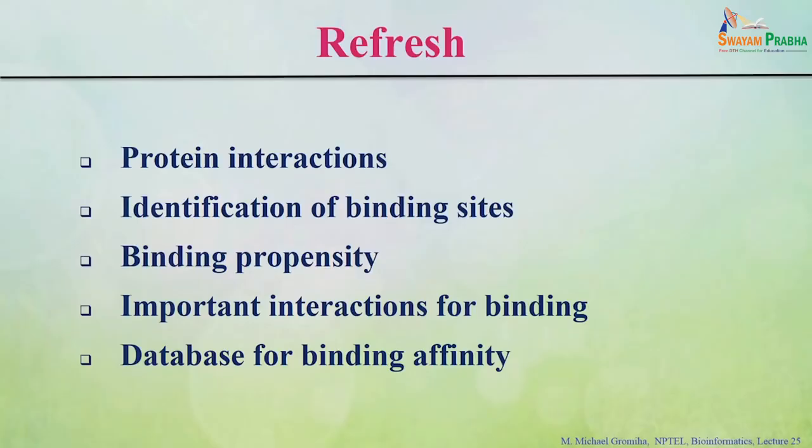In the last few classes we discussed about proteins, protein folding rates, protein stability, and protein interactions. Specifically in the last class we discussed about protein interactions: what are different types of complexes — protein-protein complexes, protein-nucleic acid complexes, protein-carbohydrate complexes, and protein-ligand complexes. All these complexes are important for several functions. We can identify the binding sites or the interface residues for any complex.